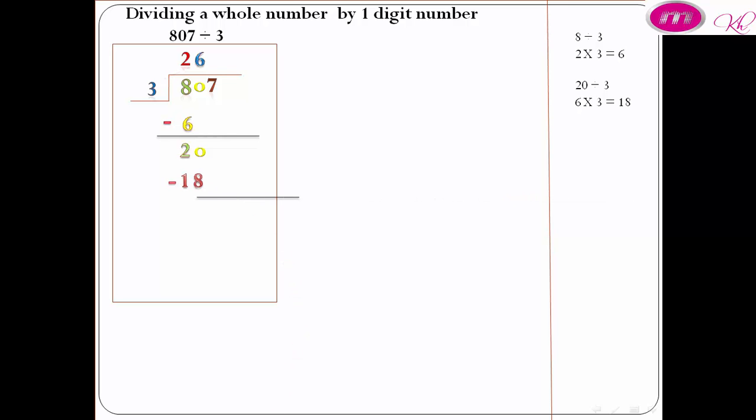20 minus 18 equals 2. 2 is less than 3, we are in the right way. Bring down 7. 27 divided by 3 equals 9. 9 above 7. 9 times 3 equals 27.